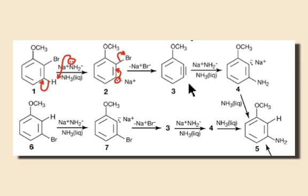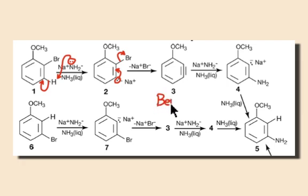The interesting point about this process is the creation of a new pi bond that creates a triple bond within the ring. This structure is appropriately called a benzyne. As you can imagine, an alkyne within a six-membered ring is very strained and highly unstable. This is indeed the case, as the benzyne structure has not been isolated. Many experiments have been conducted, however, to provide evidence for its existence.